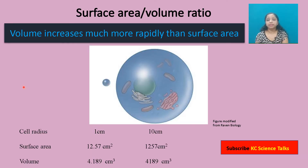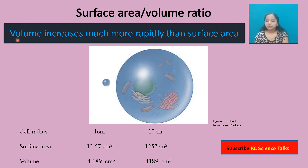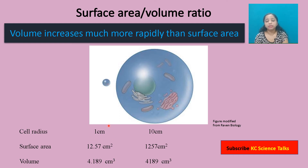Another way to understand why cells are usually small is to understand it in terms of surface area to volume ratio. As cell size increases, its volume increases much more rapidly than its surface area. Let's understand this with the help of an example. Here I have taken two spherical cells — one with a radius of one centimeter and another with a radius of ten centimeters.